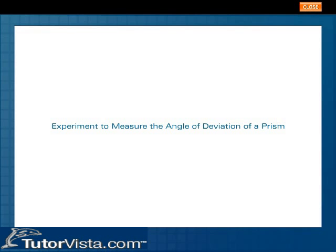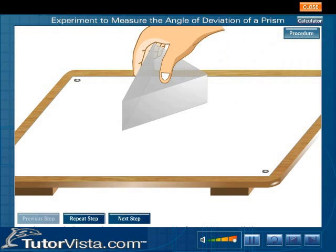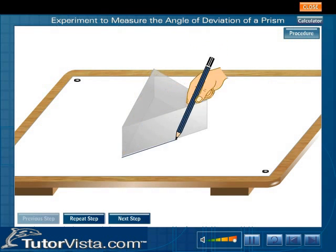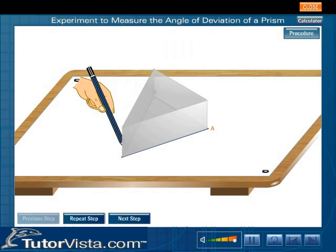Experiment to measure the angle of deviation of a prism. Place a prism on a white sheet of paper and trace its boundary ABC.